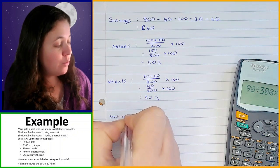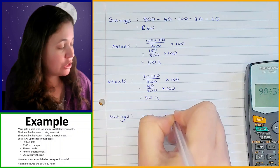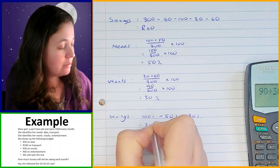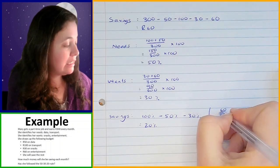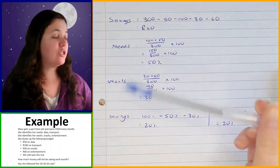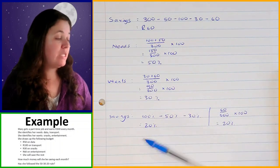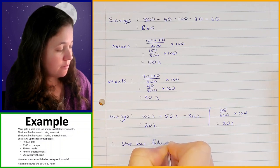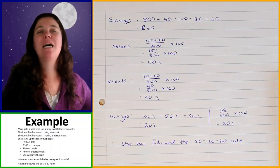And then finally, savings. There are two ways that you can work this out. You can either take what you've already worked out and say it's 100% minus the 50% she's spending on needs and minus the 30% that she's spending on wants, and that gives you 20%. Or you could also work it out by taking the 60 rand on savings out of 300, and that will also give you 20%. So based on that, we can now see she has put aside 50% of her income for needs, 30% for wants, and 20% for savings. Therefore, she has followed the 50-30-20 rule.